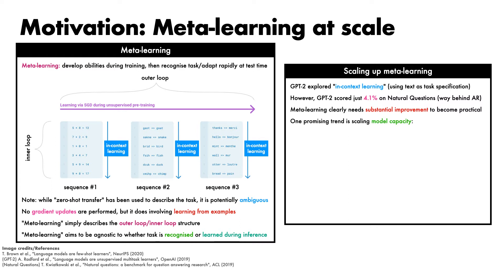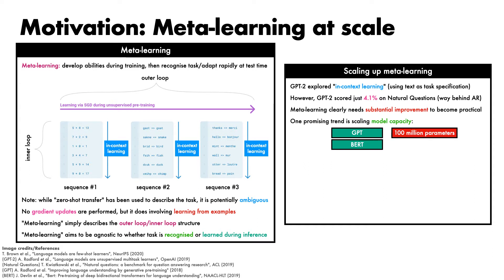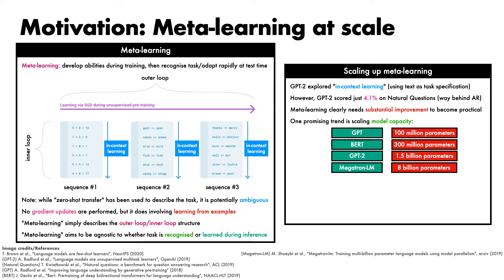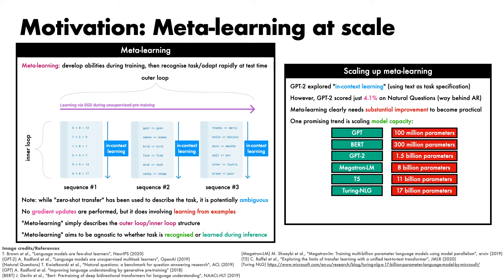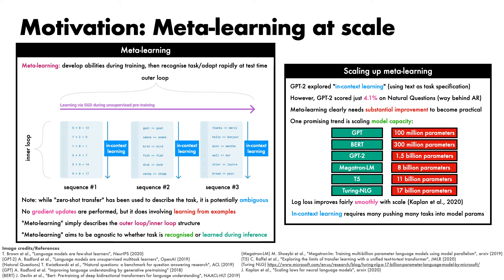Here, the authors note that one promising trend in recent literature has been model scaling. A progression of models from GPT with 100 million parameters, BERT with 300 million parameters, GPT-2 with 1.5 billion parameters, Megatron-LM with 8 billion parameters, T5 with 11 billion parameters, and Turing-NLG with 17 billion parameters have each shown improvements in NLP performance, while the work of Kaplan et al. on neural language scaling laws has shown that log loss improves fairly smoothly with scale. Since in-context learning requires acquisition of many skills into the model parameters, the question then arises of whether in-context learning will also similarly improve with scale.